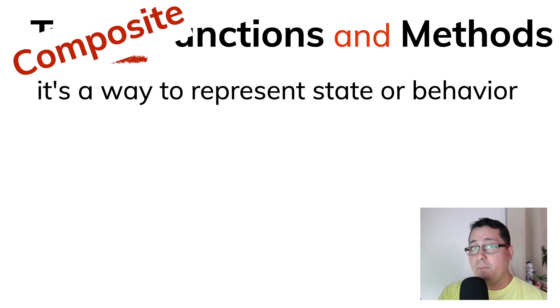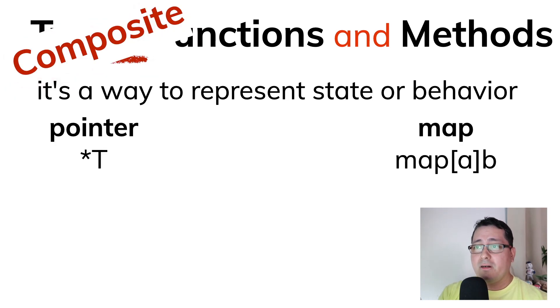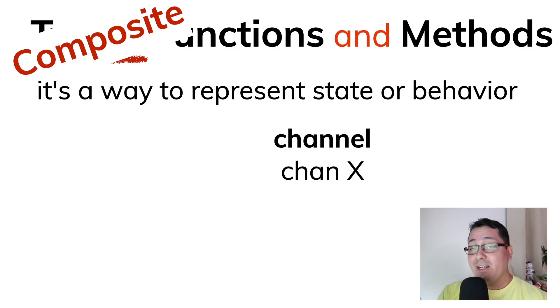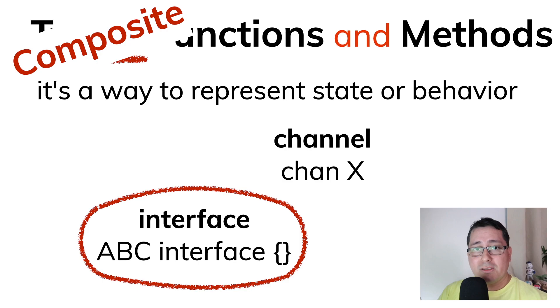There is also this concept of composite types, like a pointer, like a map, like a function, a slice, an array, a channel, and the one that we're going to be discussing even more this time, an interface.